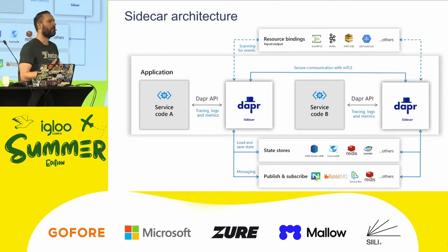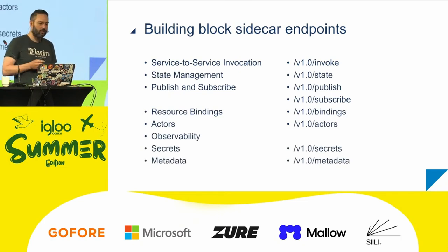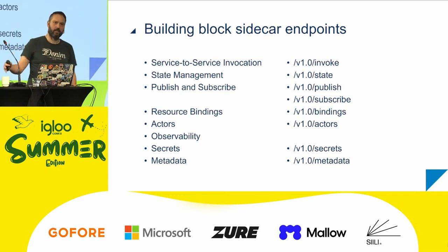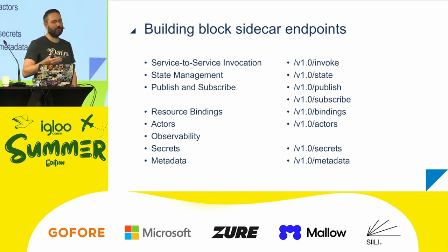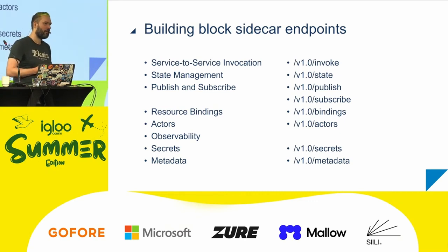If you look at the Dapr API, basically every building block has its own endpoint. For example, if I want to call another service, I use the invoke endpoint — and Dapr is responsible to find the other party and make sure my data gets to that location. The same for state, for publish and subscribe — not surprisingly, we have two endpoints, one for publish and one for subscribe. We have bindings, actors for the actor model, observability — observing traffic doesn't need an endpoint — secrets, and a metadata endpoint to know about the state of your Dapr environment.